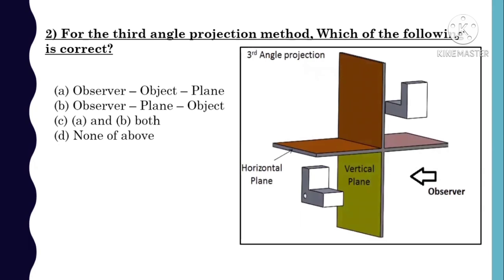We are talking about third angle projection. This is our different plane quadrant system — first, second, third. In the third quadrant, the observer sees from here, so the order becomes: first observer, then plane, then object. Option A is wrong because observer→object is the first angle order. So option B is correct.